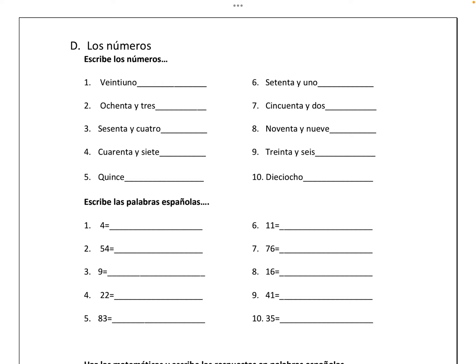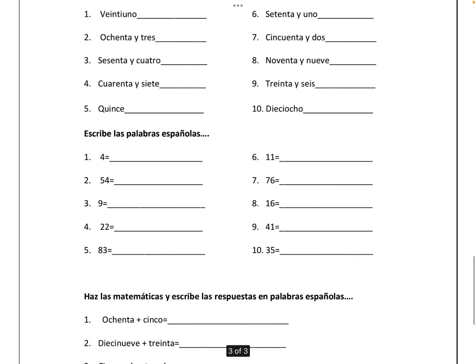Number six is 71, number seven is 52, number eight is 99, number nine is 36, number ten is 18. So writing the words in Spanish: